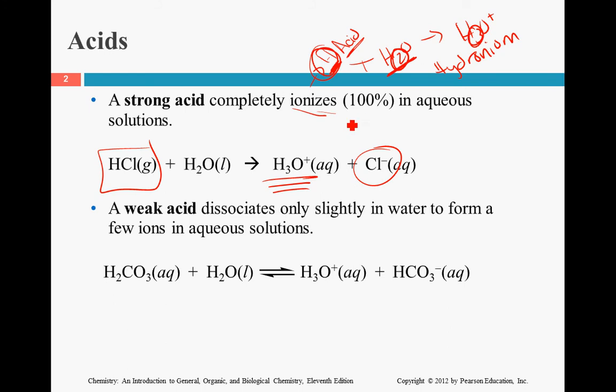Now with a strong acid, that happens 100% of the time. You notice that this one-sided arrow, it only goes to the right. That means once this chlorine is missing that hydrogen, the chlorine has no desire to get that hydrogen back.